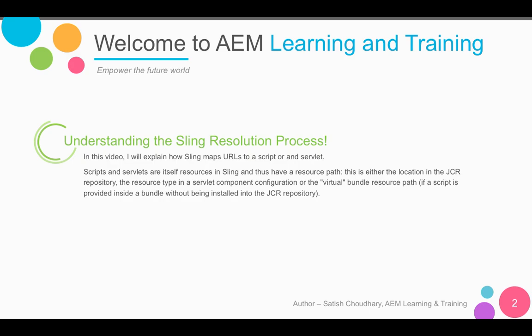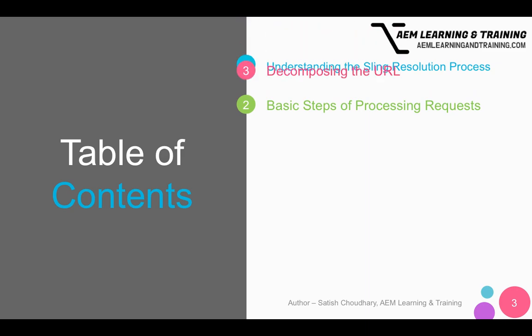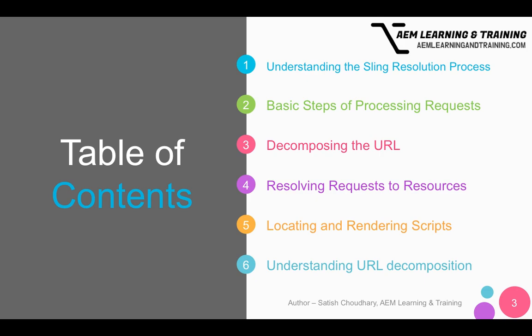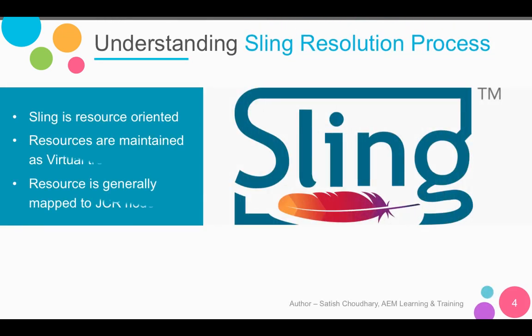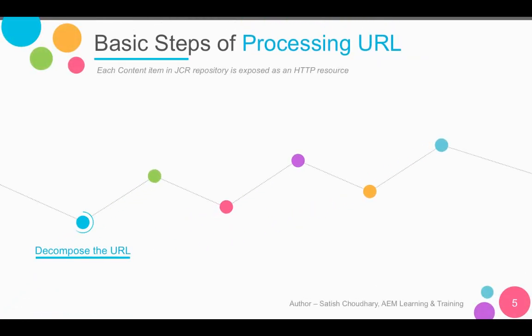A quick introduction to what I'm going to cover today: understanding the sling resolution process, the basic steps for processing a request, how we decompose the URL, resolve the request to resources, locate and render scripts, and finally understanding the entire URL decomposition process. Sling is resource-oriented, so all resources are stored and maintained as a virtual tree, generally mapped to JCR nodes. Every URL ultimately points to a resource node inside the JCR structure.